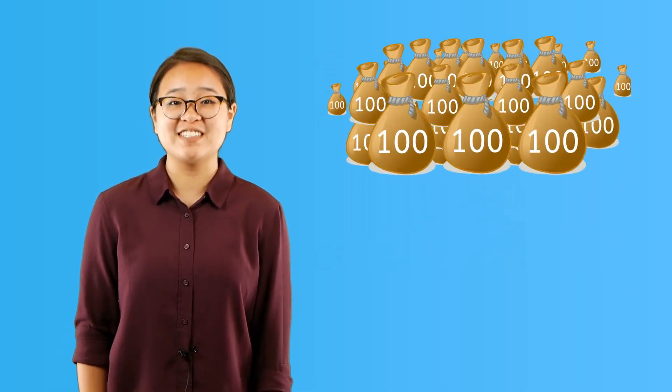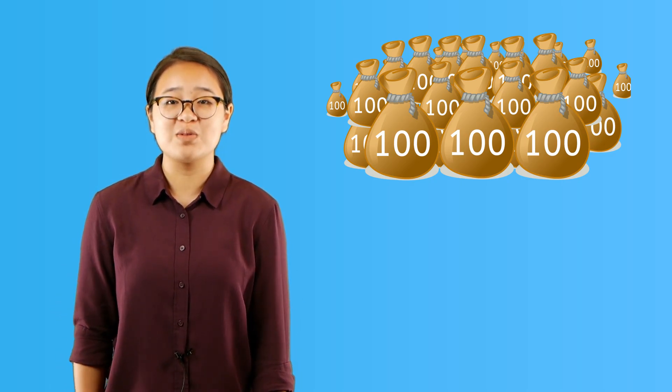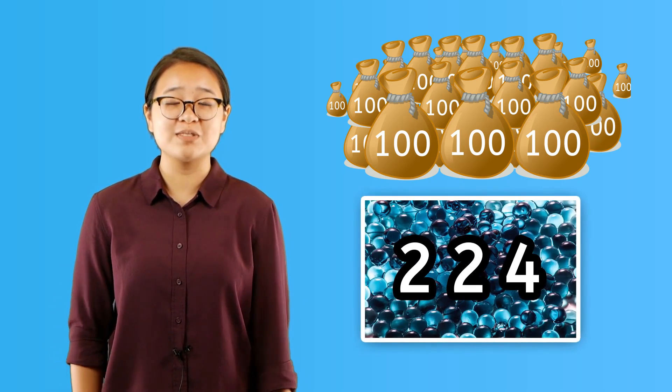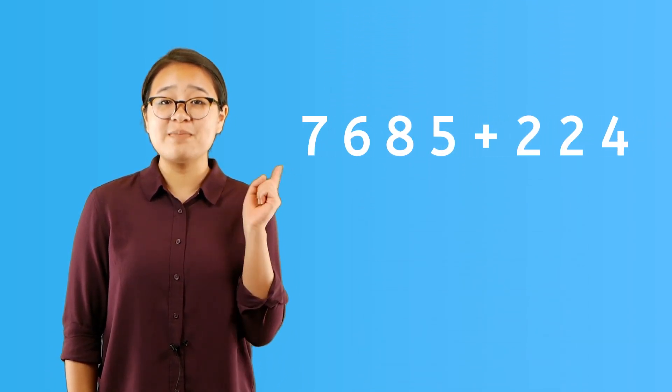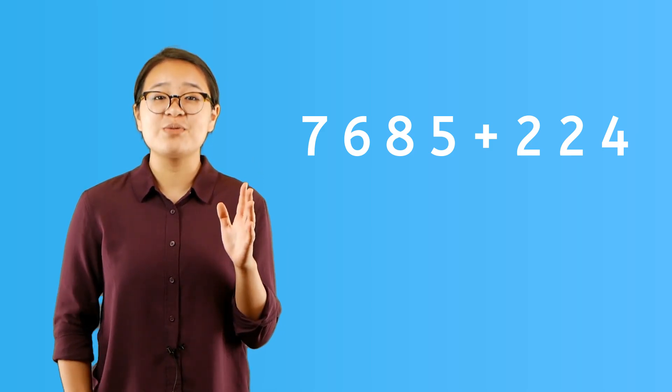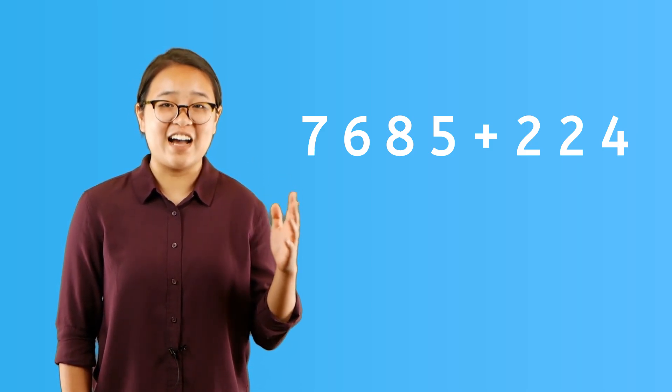Here's a way rounding can help. Imagine you have a marble collection of 7,685 marbles. That's a lot of marbles, but you know you have this exact number because you keep your marbles in bags of 100. Your cousin wants to get rid of his marbles, so he gives you 224 marbles. How many marbles do you have now? These are pretty big numbers. Let's use rounding to estimate how many marbles you have. Since you keep your marbles in bags of 100, let's round to the nearest hundred.